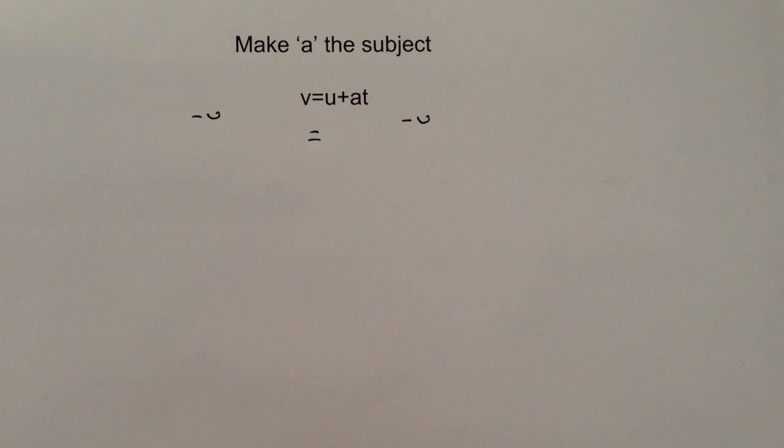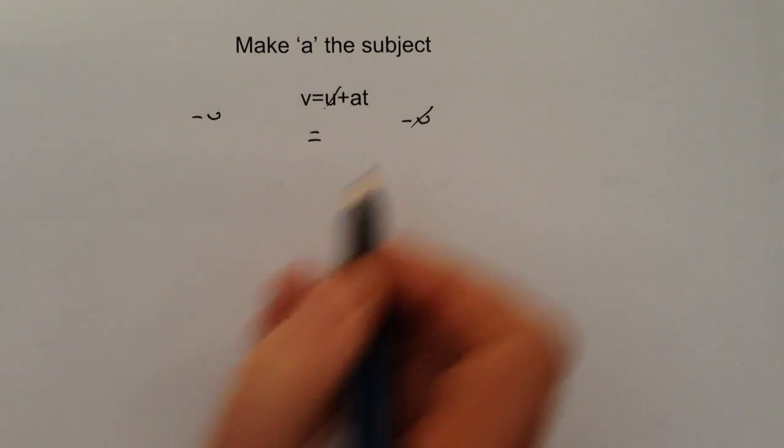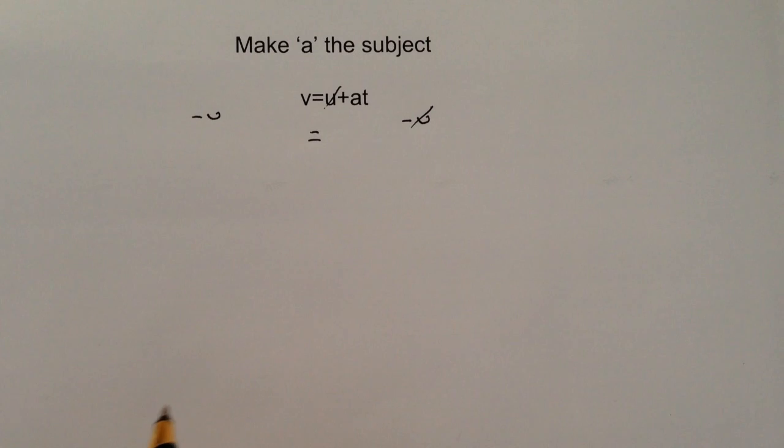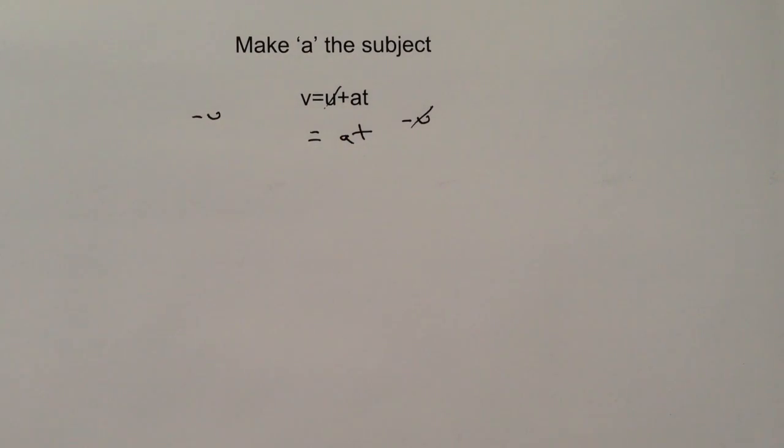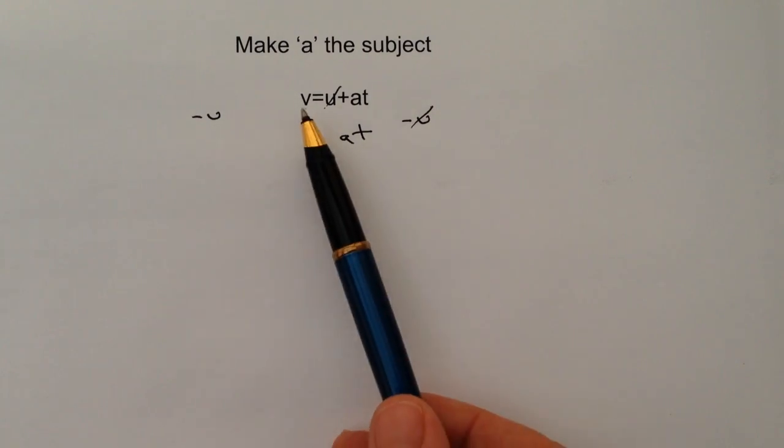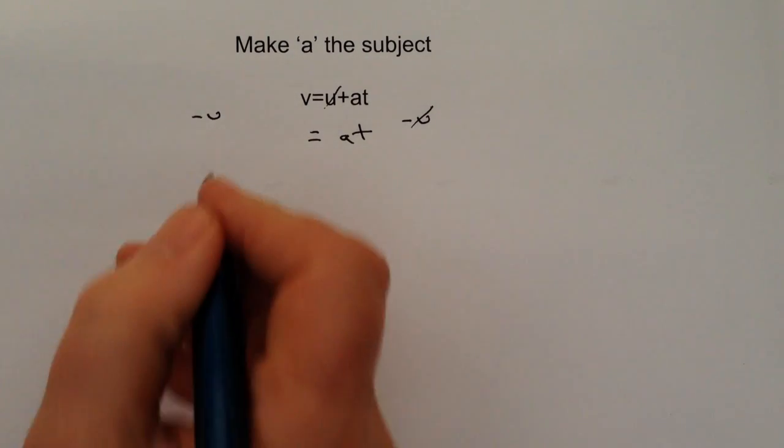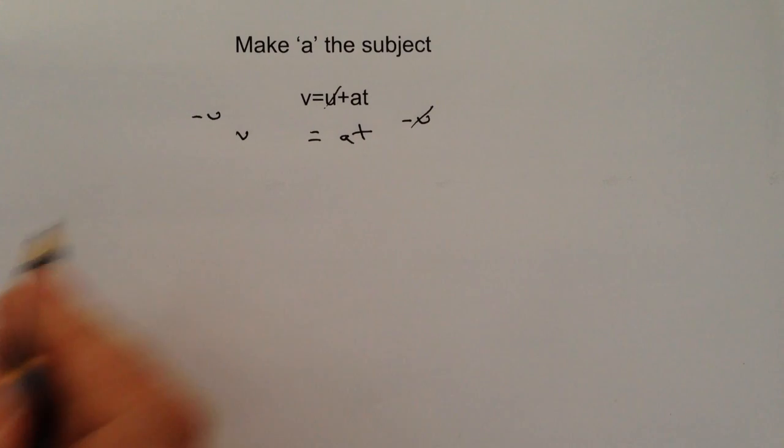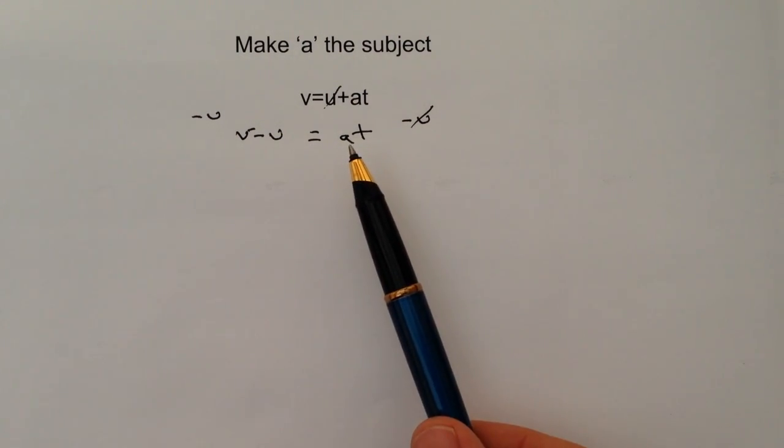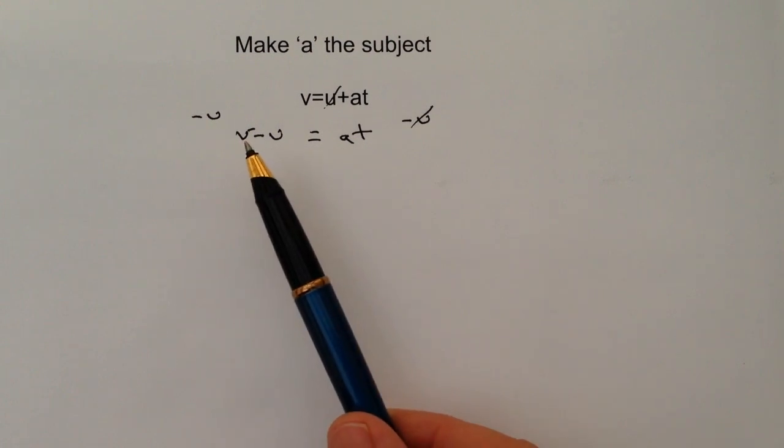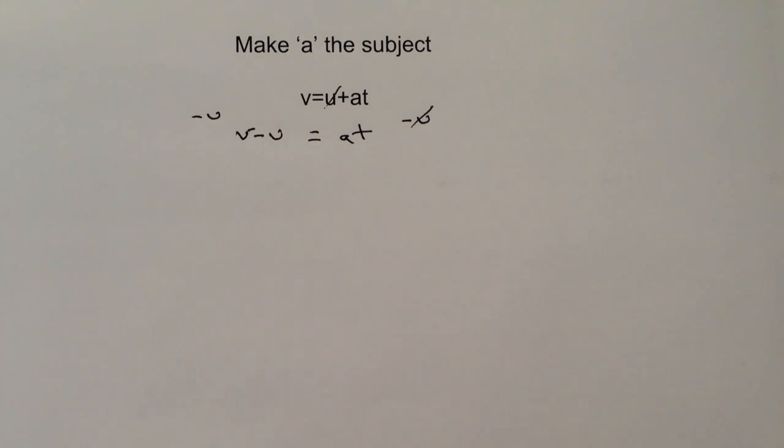And it leaves me on the right hand side with just simply at. On the left hand side I have v which is already there, and minus u. So we're now in a position where we've got a times t equals v minus u.